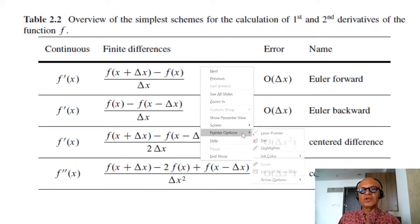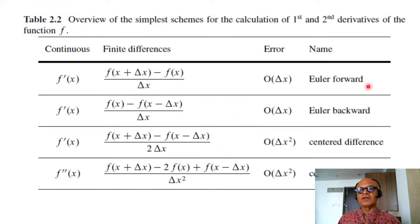We looked at this table of numerical discretizations. These are called discretizations. This is a continuous representation of the first derivative, and this is the discretization. And we have said it looks similar for time and space.